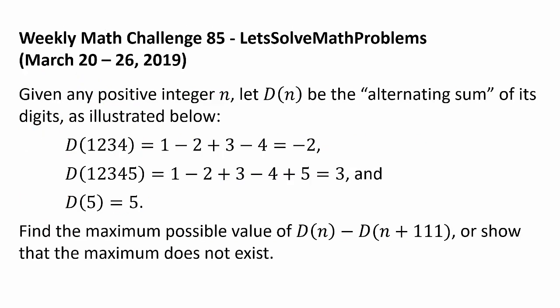Given any positive integer N, let D(N) be the alternating sum of each digit, as illustrated below. D(1234) is 1 minus 2 plus 3 minus 4, or negative 2. And D(12345) is 1 minus 2 plus 3 minus 4 plus 5, or 3.